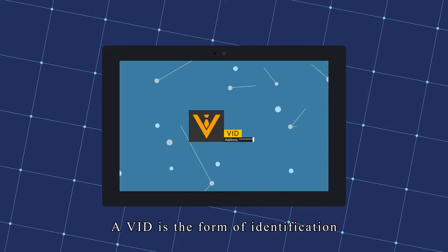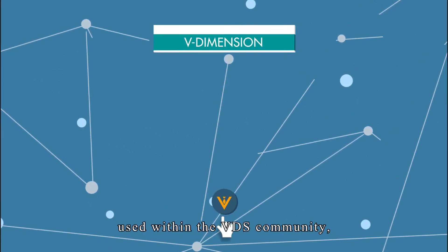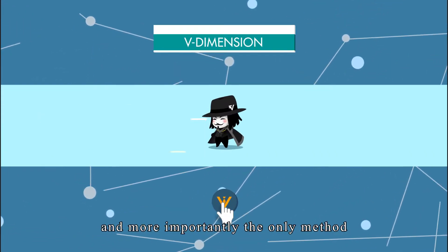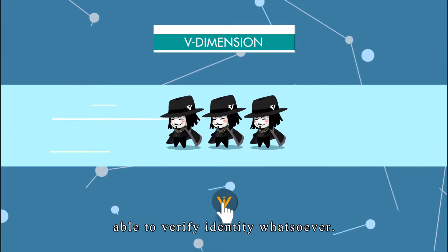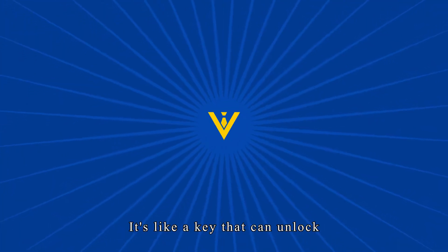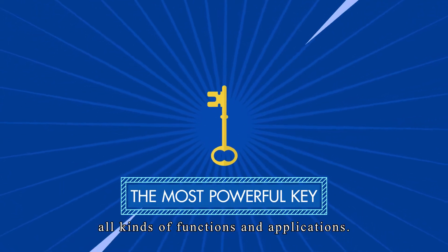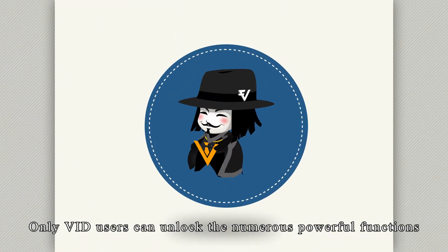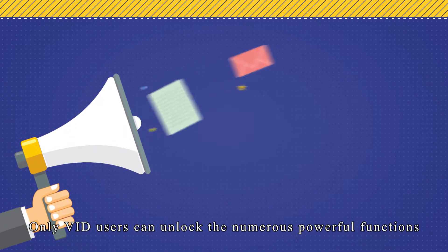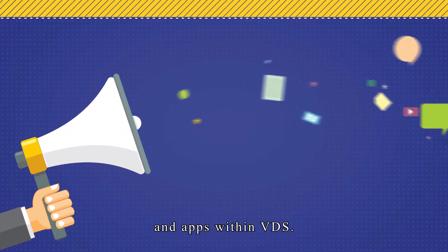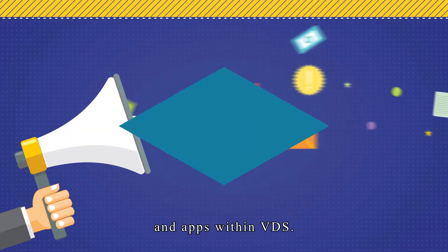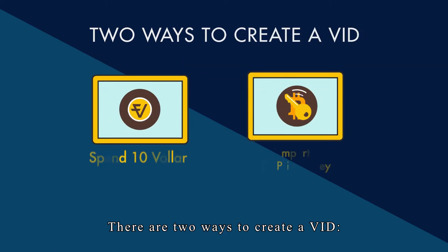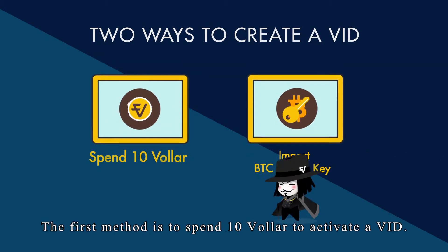A VID is the form of identification used within the VDS community and, more importantly, the only method able to verify identity whatsoever. It's like a key that can unlock all kinds of functions and applications — only VID users can unlock the numerous powerful functions and apps within VDS. There are two ways to create a VID.